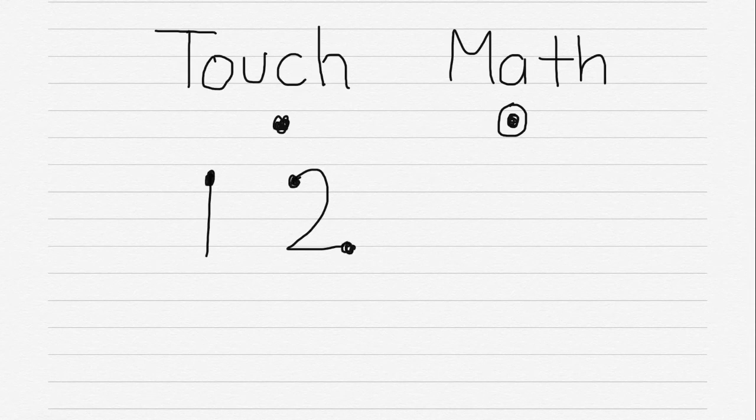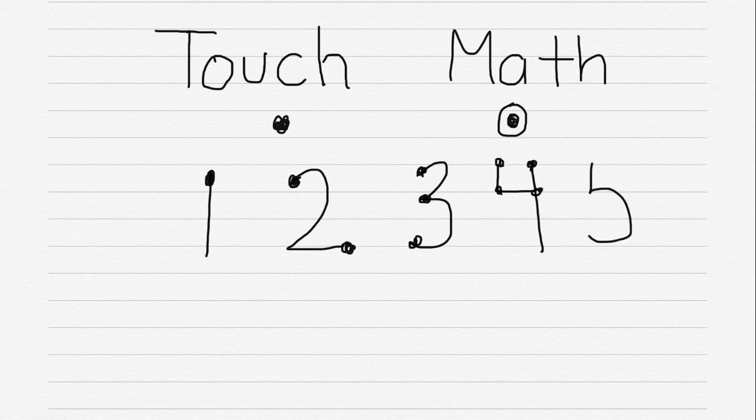For example, if I have 1, I have 1 dot there. If I have 2, I have a dot there and a dot there. If I have 3, I have 3 dots. 4, I have 4 dots, and 5, I have 5 dots on the number to count.